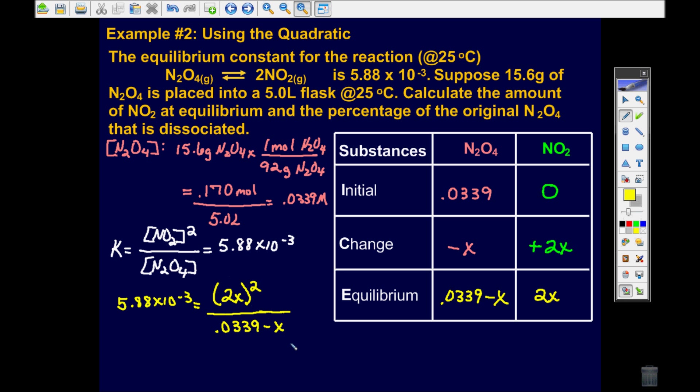Now I'm going to do like I did before, and put that over 1, and cross multiply. When I do that, I get 2X squared, well let me just go ahead and simplify that. 2X squared is 4X squared, because this square is on the outside of the parentheses, it squares the 2, and then also squares the X. So that is equal to 5.88 times 10 to the negative 3 times 0.0339 minus X.